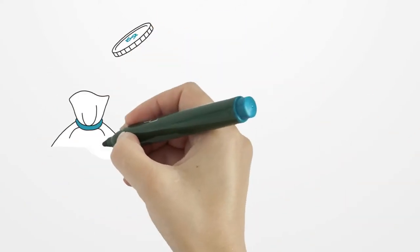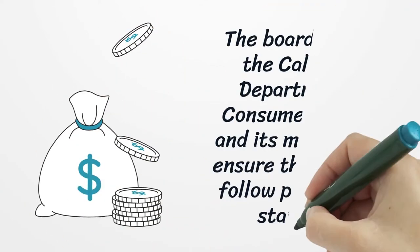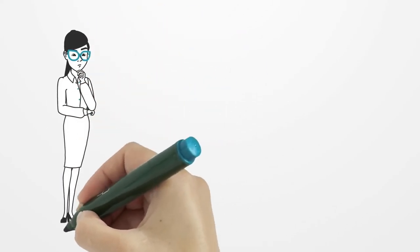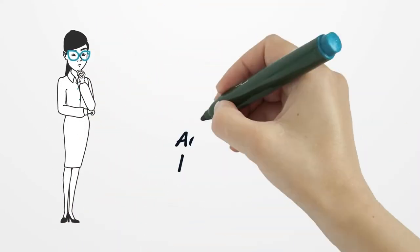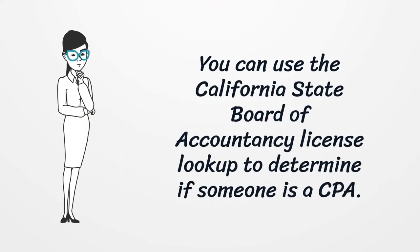The California Board of Accountancy regulates CPAs in the state. The board is under the California Department of Consumer Affairs, and its mission is to ensure that all CPAs follow professional standards. You can use the California State Board of Accountancy license lookup to determine if someone is a CPA.